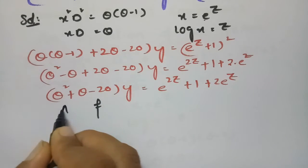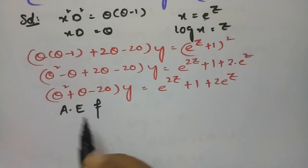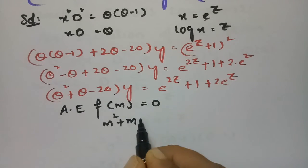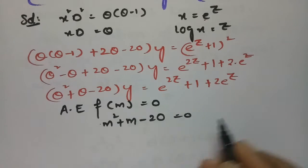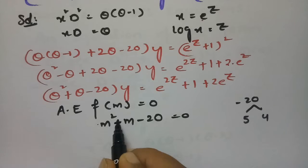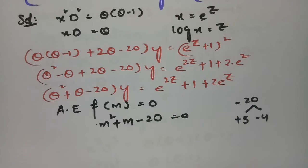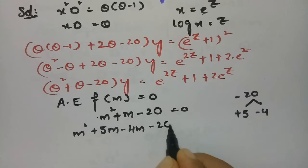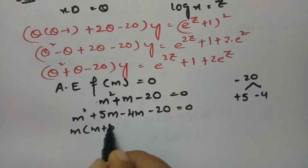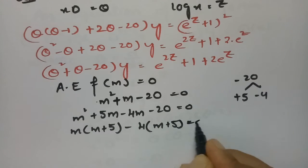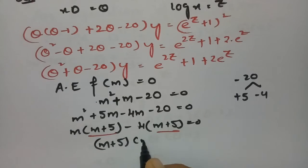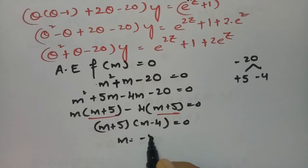To find the complementary factor, we set up the auxiliary equation f(m) = 0. Replacing θ with m: m² + m − 20 = 0. The product is −20 and we need factors: 5 and 4. Since there is a plus sign, the bigger number gets plus and the smaller gets minus. So: m² + 5m − 4m − 20 = 0, giving m(m+5) − 4(m+5) = 0, so (m+5)(m−4) = 0. The roots are m = −5 and m = 4.